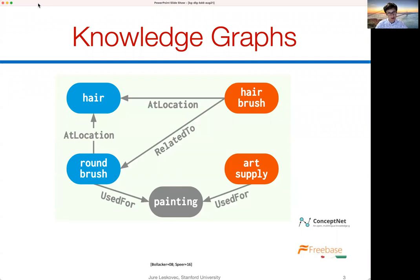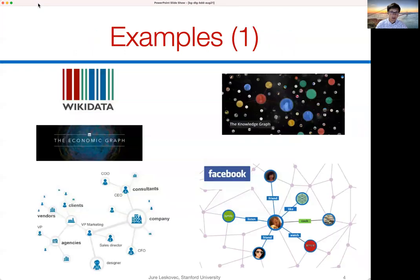For example, we can encode common sense knowledge. Here I'm showing a small example of a knowledge graph called ConceptNet that talks about different applications of hair and hairbrush, types, and what they are related to. There are many other examples — we can think of all of Wikipedia or all of Facebook or LinkedIn as one giant heterogeneous knowledge graph.